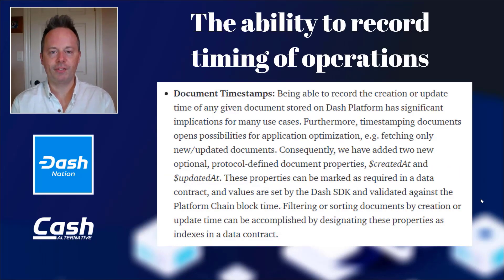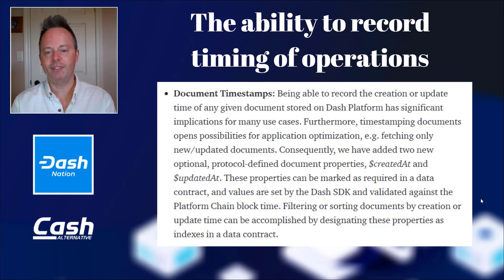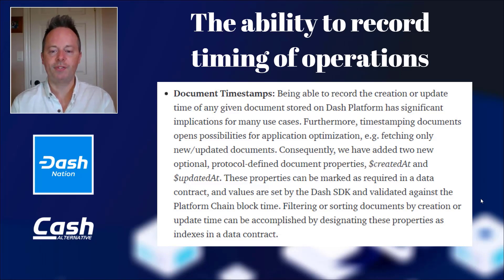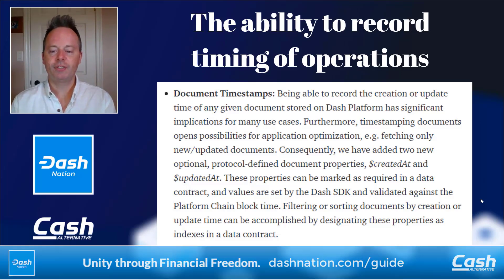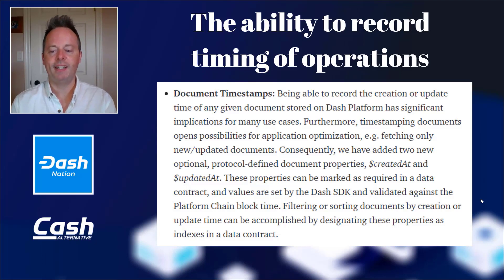The ability to record timing of operations is very important to keep things running smoothly on Dash platform — you have to know when things are happening, when things were confirmed, when they're going into your programming for when you're building applications. So they introduced document timestamps. Being able to record the creation or update time of any given document stored on Dash platform has significant implications for many use cases. Furthermore, timestamping documents opens possibilities for application optimization — for example, fetching only new or updated documents. Two new optional protocol-defined document properties have been added: CreatedAt and UpdatedAt. These properties can be marked as required in a data contract and values are set by the Dash SDK and validated against the platform chain block time. Filtering or sorting documents by creation or update time can be accomplished by designating these properties as indexes in a data contract.